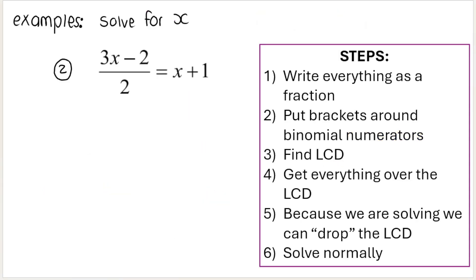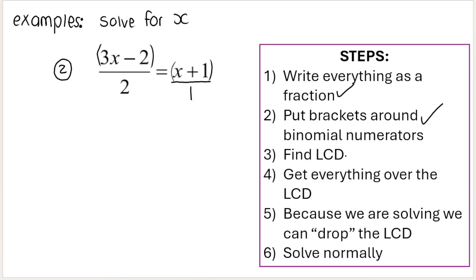What if I have something like this? I actually copied and pasted this from a past paper. Write everything as a fraction. You can write them as little individual fractions, or if I have a binomial like x plus 1, we can write the entire thing as a fraction — you'll get the same answer. Then put brackets around binomial numerators: that's two terms, two terms, so I'll put brackets around them. Find the LCD. I've got 2 and 1, so the LCD in this case is 2.